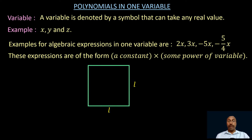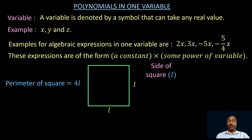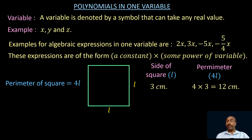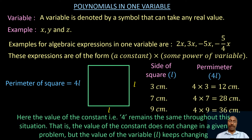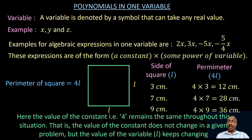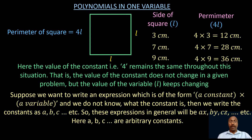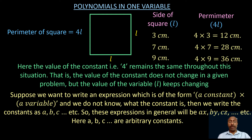Consider a square of side L with perimeter 4L. If the side is 3 cm, the perimeter is 12 cm; if 7 cm, the perimeter is 28 cm; if 9 cm, the perimeter is 36 cm. The value of the constant 4 remains the same, but the value of the variable L keeps changing. If we don't know the constant, we write it as a, b, c, etc., giving general expressions ax, by, cz, where a, b, c are arbitrary constants.